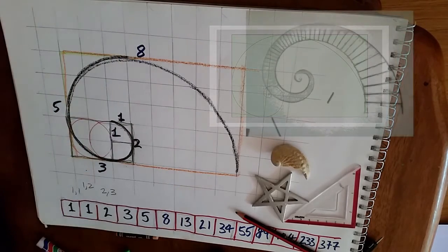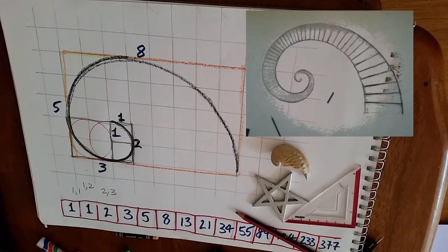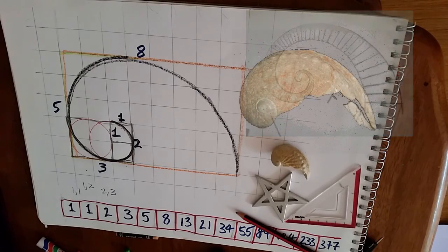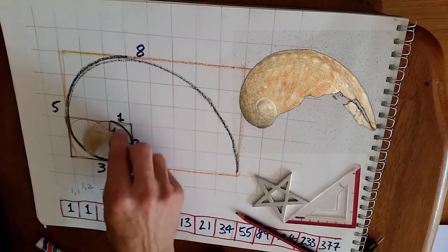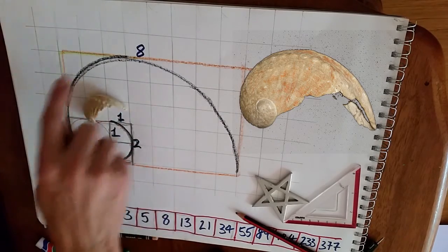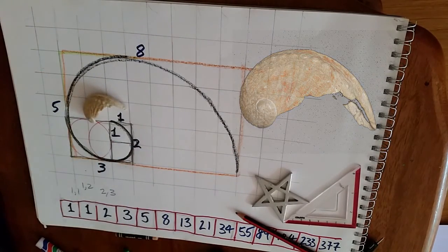There's lots of stuff on Fibonacci numbers and Phi, but this is just a quick demonstration of how it is in nature and how we can do it with some basic geometry. Thank you.